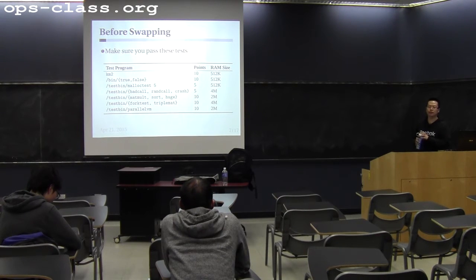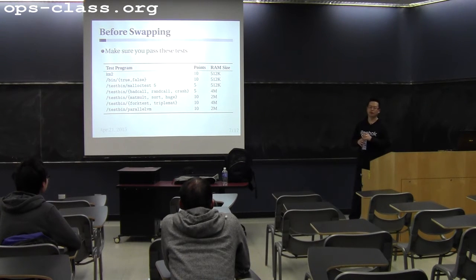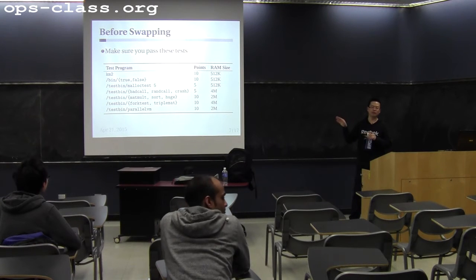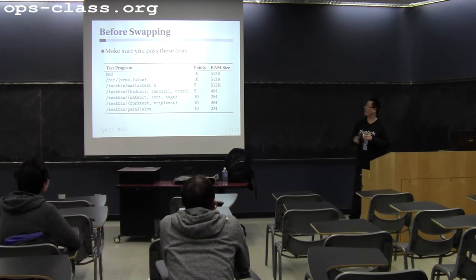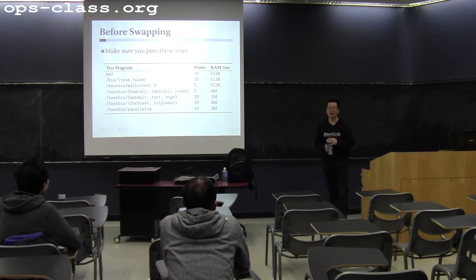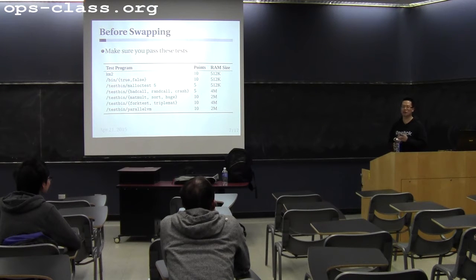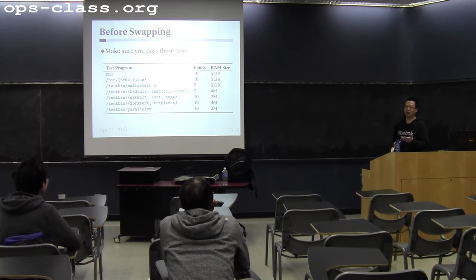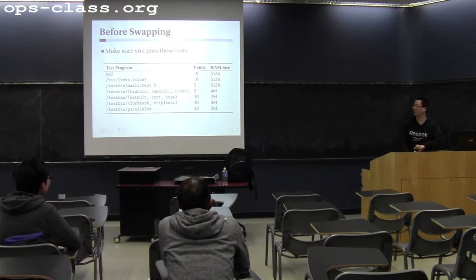Which tests have you been able to run? At least KM1 and KM2, right? For bin true and bin false, you need a pretty complete address space implementation — as_create, as_define_region, as_copy, as_activate, a page table, region information, and a VM fault handler. These are the test cases, and you should pass them before doing swapping.